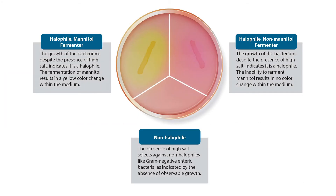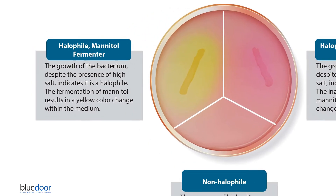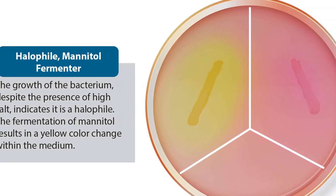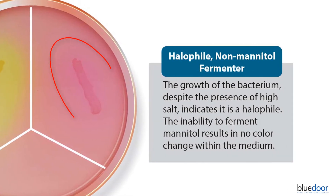Let's now review some expected results with MSA. The growth of the bacterium pictured indicates it is a halophile. The yellow coloration of the medium means the bacterium is also a mannitol fermenter. We then see the growth of another halophile. What distinguishes or differentiates this bacterium is its inability to ferment mannitol, which is indicated by a lack of color change within the medium.